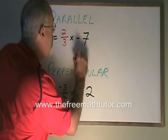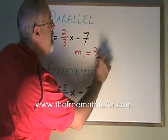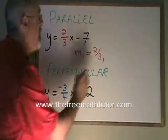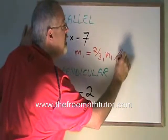I write m1 slope of line 1 is equal to 2 thirds. Then I state that slope 1 is parallel to slope 2.